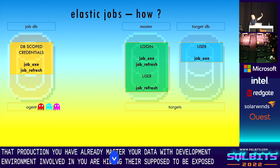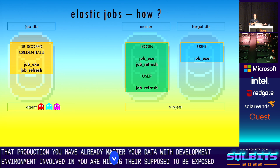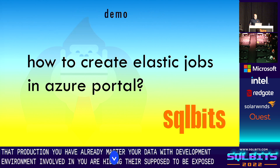We create the database-scoped credentials on the job database, then create the login in the master database. The refresh user will be in the master database, and the job execution user will be in every target database. Then we push the jobs and they can execute against those targets.